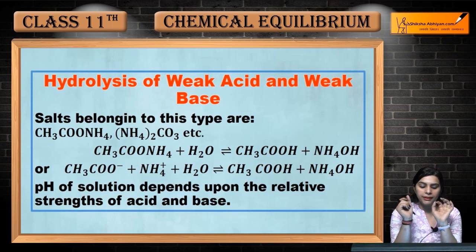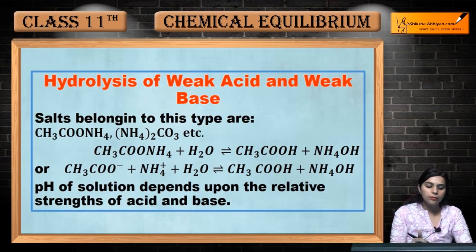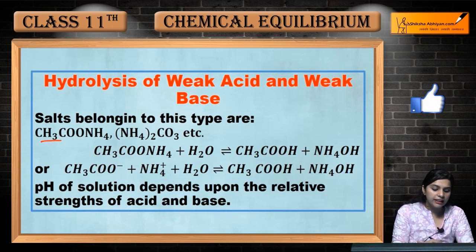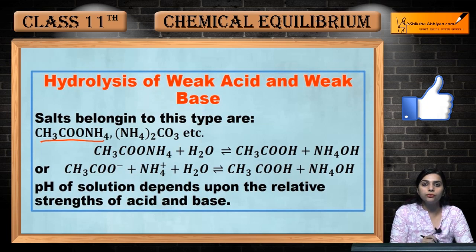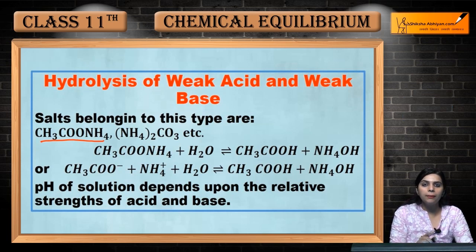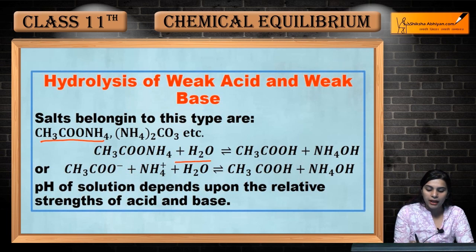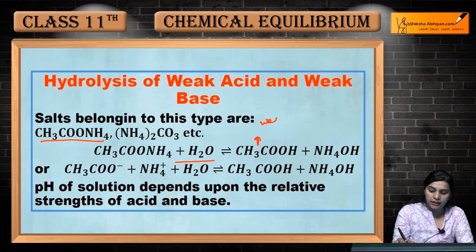Kaunse salt aate in this category mein? CH3COONH4 — ammonium acetate. Yeh kaisa hai? Weak acid aur weak base se banaya. Iska hydrolysis kiya toh kaunse acid mila? Acetic acid aur ammonium hydroxide — yeh humaara weak acid hai aur yeh humaara weak base.